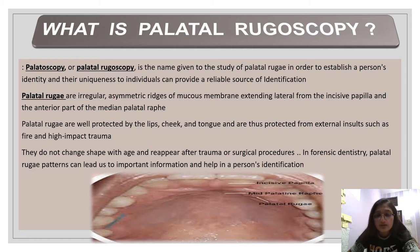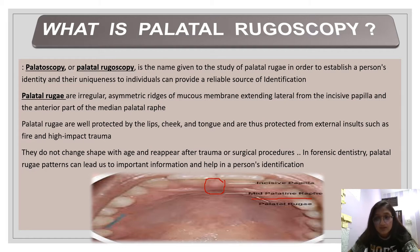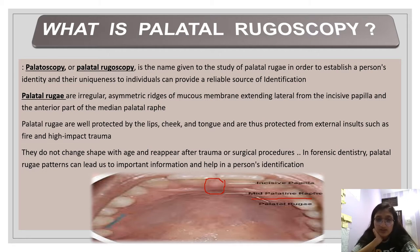Palatal rugae are irregular asymmetric ridges of mucous membrane extending laterally from the incisive papillae and the anterior part of the median palatal raphe. As seen in the diagram, below the incisive papillae is the median palatal raphe, and on both sides of the median palatal raphe there are these irregular asymmetric ridges. Palatal rugae are well protected by the lips, cheek, and tongue from external insults such as fire and high-impact trauma. They do not change shape with age and reappear after trauma or surgical procedures. In forensic dentistry, palatal rugae patterns can lead to important information and help in a person's identification.